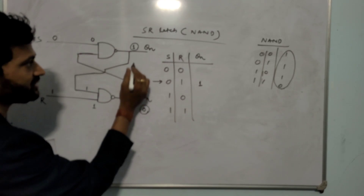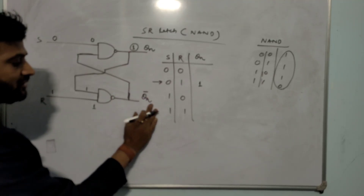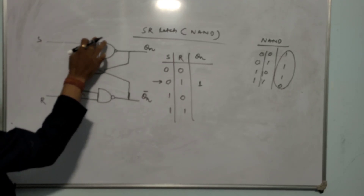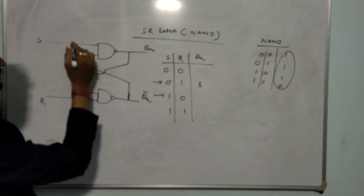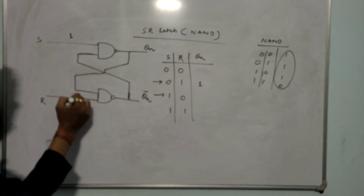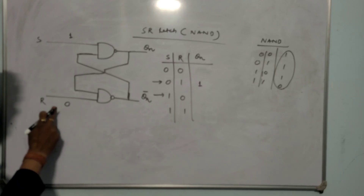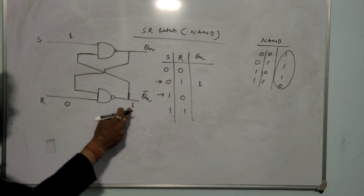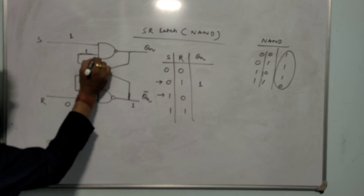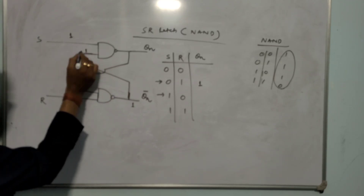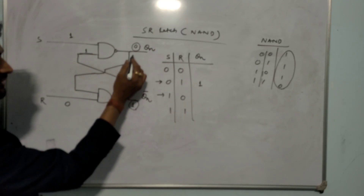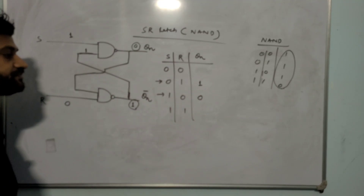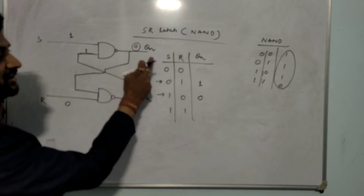Next, for S=1, R=0: coming to this NAND gate, if any one of the input is 0 the answer is 1. If the output is 1, then that 1 is given to the second terminal of the second NAND gate — both inputs are 1, so the answer is 0. So Qn=0, and Qn-bar=1.